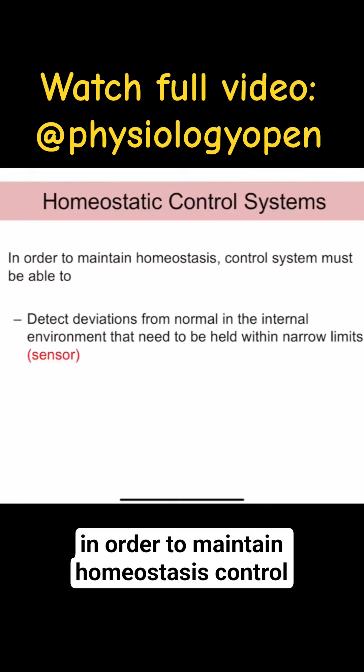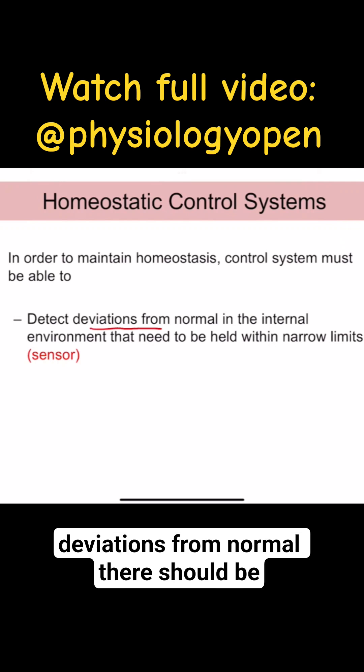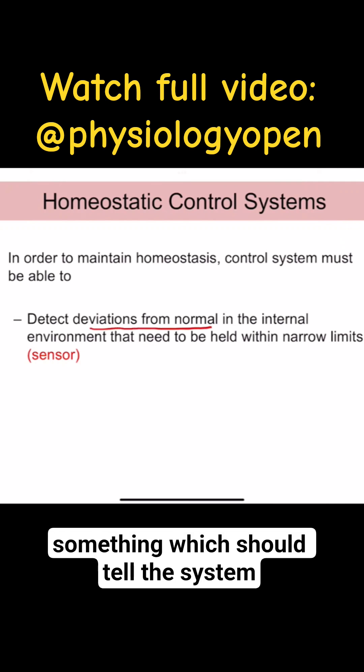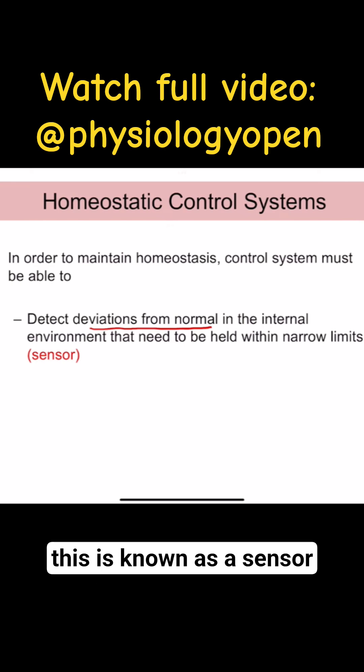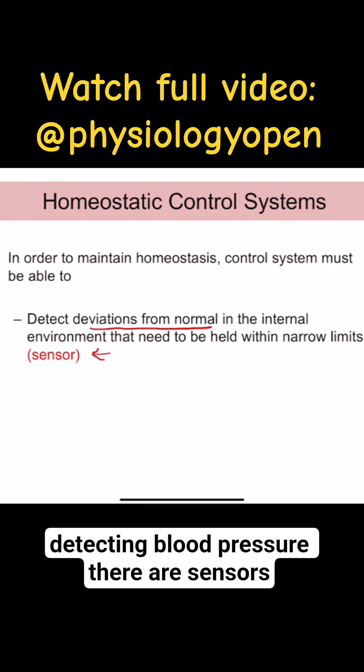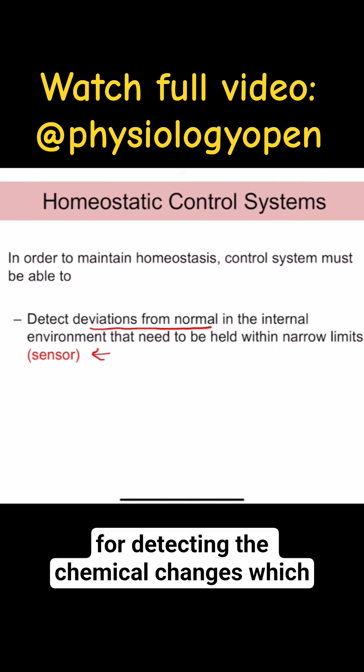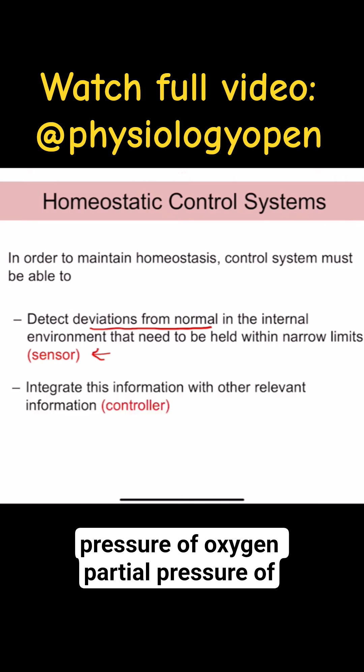In order to maintain homeostasis, control systems must be able to detect deviations from normal. There should be something which tells the system there is a deviation, and this is known as a sensor. We have lots of sensors, for example, sensors for detecting blood pressure, sensors for detecting chemical changes such as the partial pressure of oxygen and partial pressure of carbon dioxide.